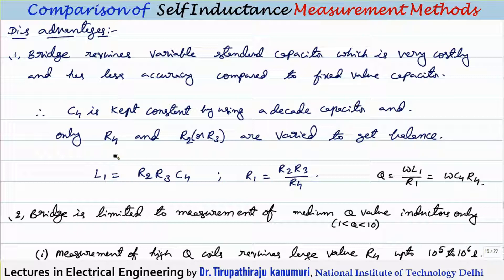Since R1 = R2R3/R4 and L1 = R2 × R3 × C4, with C4 constant, either R2 or R3 is selected as variable for obtaining L1, and R4 is varied to get balance.